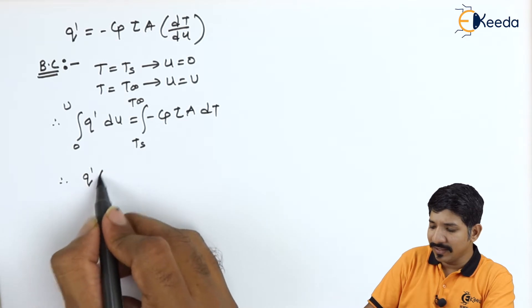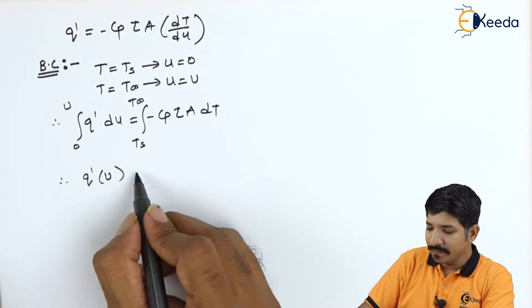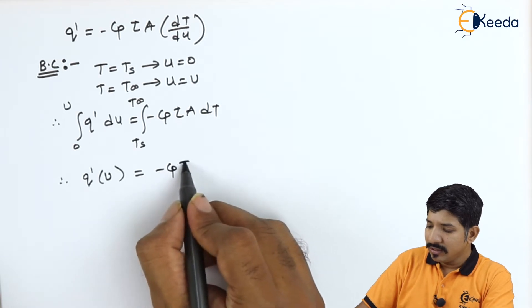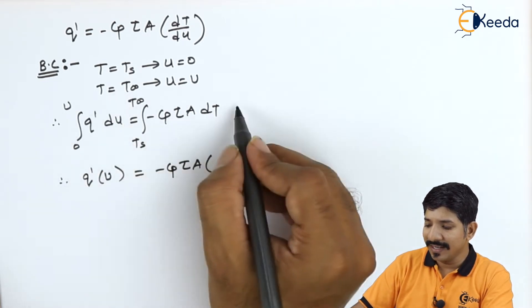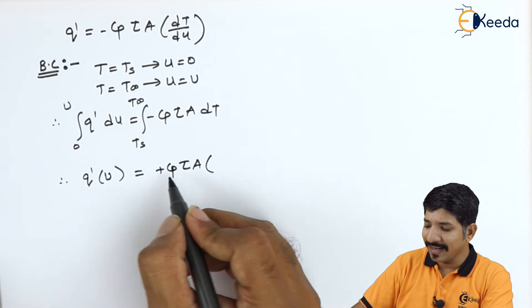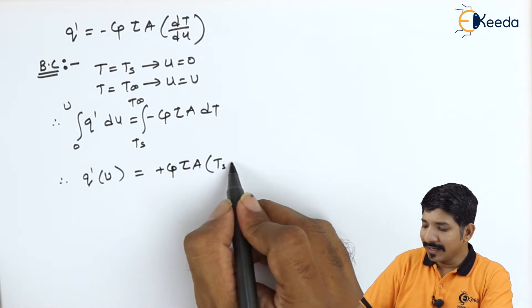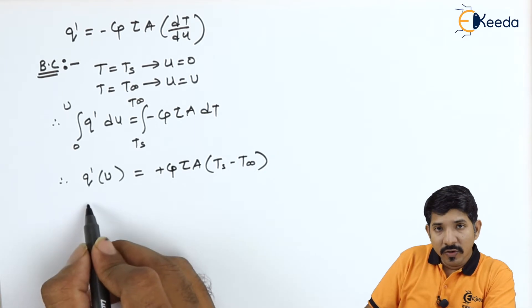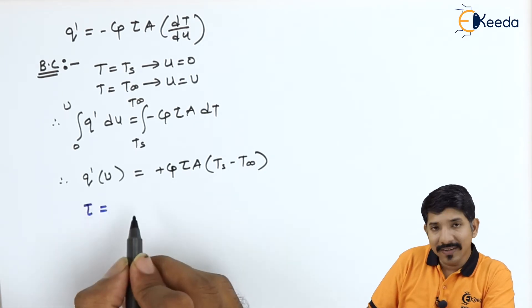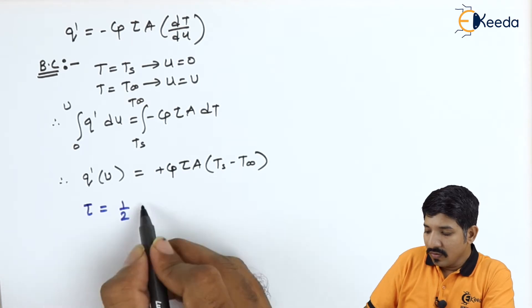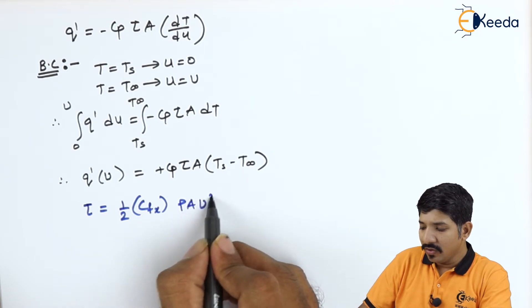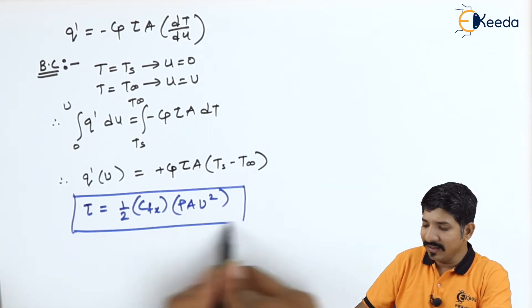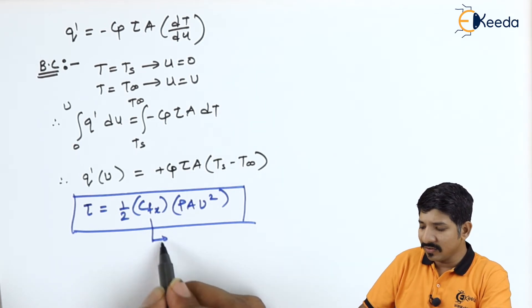So now if I keep on solving this, I can write this as q' into u minus 0, that is u itself, is equal to minus Cp tau into area. Now here I can write down this as T infinity minus Ts. So I can accommodate this minus sign. I can write this plus and it can be written as Ts minus T infinity. Now we know that tau is given as 1 by 2 Cpx into rho a u square.